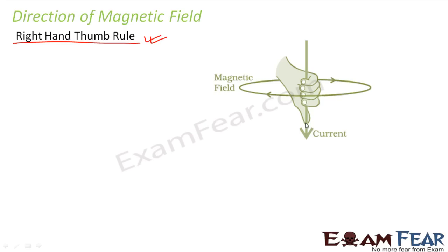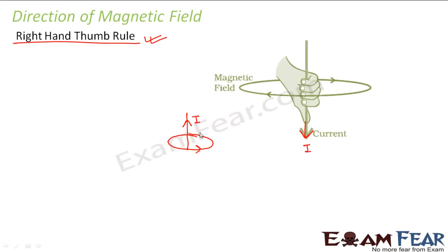If your thumb points in the direction of current, and current is flowing downward through a straight conductor, then since your fingers curl in that direction, the magnetic field is present around the wire in the form of concentric circles in a clockwise direction. Similarly, if the current is in the upward direction, take your right hand and put your thumb in the upward direction — all your fingers will point in the anticlockwise direction. So the magnetic field is in the anticlockwise direction in the form of concentric circles. Using this right hand thumb rule, we are able to determine the direction of magnetic field.